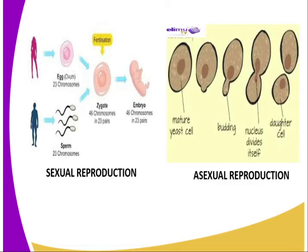Now let us look at the importance of reproduction. The first importance is that it is used for procreation — reproduction sustains or perpetuates the species so that it does not become extinct. Since no living organism lives forever, every species must produce new individuals, or what we call offspring, in order for the species to continue.